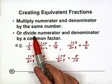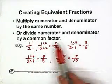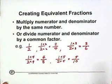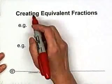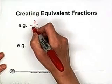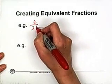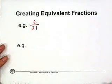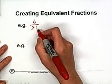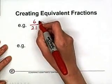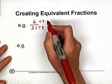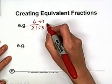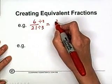Also, we can divide the numerator and the denominator by a common factor and still get an equivalent fraction. For example, we have the fraction six over 21. Using the division method — because six and 21 have a common factor of three — we divide three into the numerator and three into the denominator, and we get two over seven.